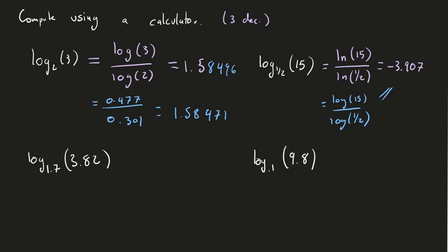So these more terrible ones. So this is equal to the natural log of 3.82 divided by the natural log of 1.7. So doing this, so 3.82 divided by log of 1.7, I get that's 2.526. That's pretty nice.